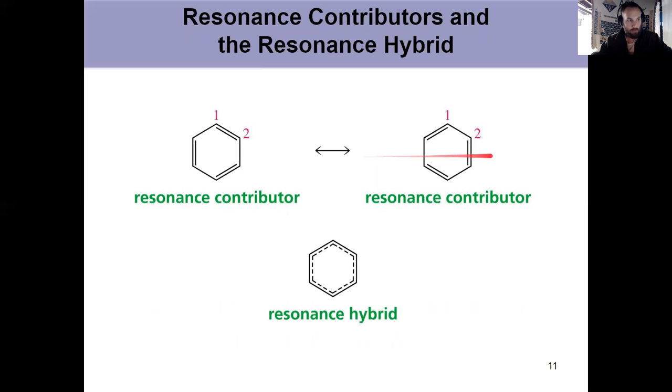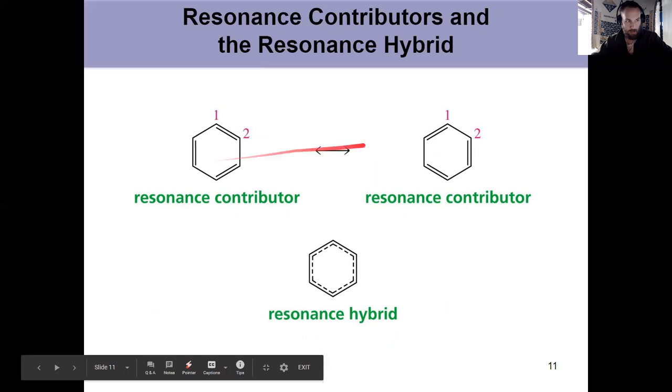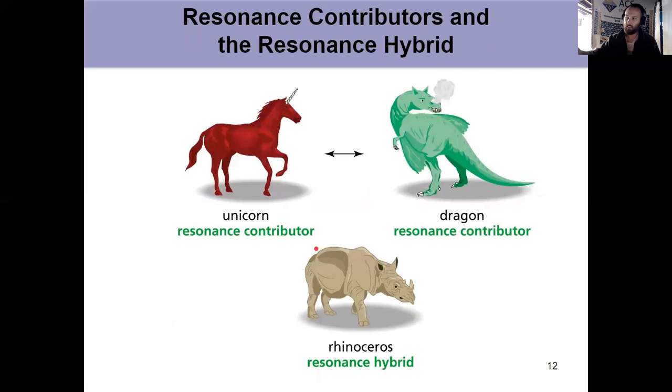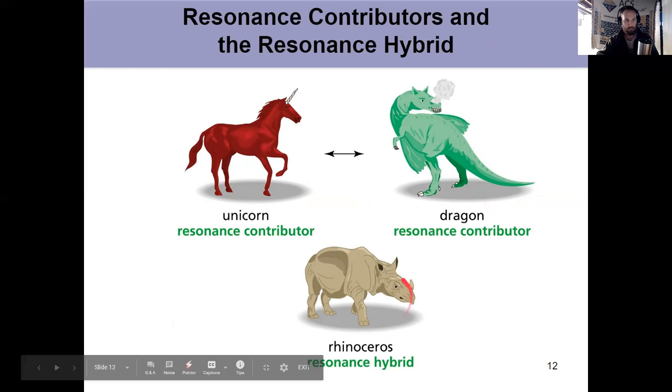Benzene is planar. We have two resonance contributors. Remember these terms from general chemistry. Two resonance contributors, one resonance hybrid. These are how we draw it conveniently on paper. This is what actually exists in the environment. You might recall this slide from GenChem. Neither resonance contributor actually exists, nor does a hybrid jump between the two. You combine them together. The resonance hybrid is what you can actually find.